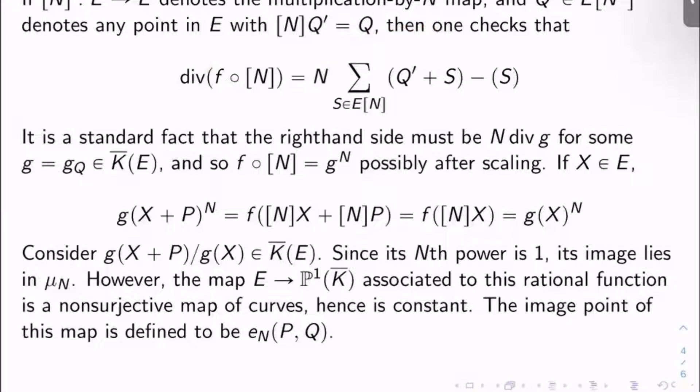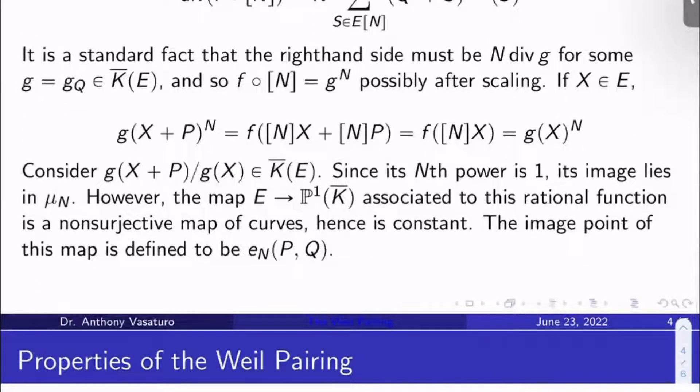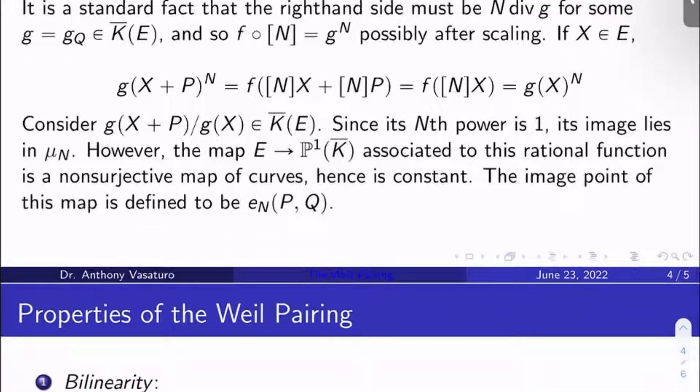So we have f composed multiplication by N is g to the N, possibly after scaling by some non-zero constant, of course. But that won't be relevant. If X now is any point in E, let's look at what happens. Let's look at g(X + P) to the N power. What is that? Well, what's g of something to the N power? It's f composed N of that thing. So we should get f composed multiplication by N of X, multiplication by N of P added together. This is again, just following from the fact that f composed multiplication by N is g to the N.